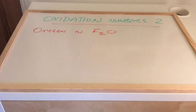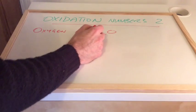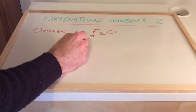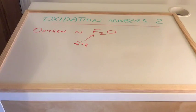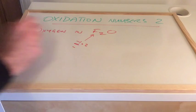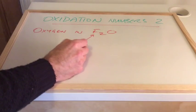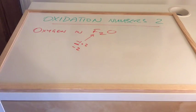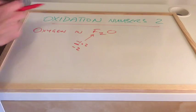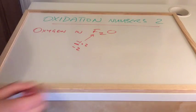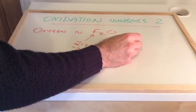If we think about the rules, we've got an always rule for fluorine — each fluorine is minus 1. So we multiply that by 2, because there are 2 F's in F₂O, giving us a combined minus 2. So to keep this compound neutral, that oxygen — remember it's usually minus 2 — but because it's with fluorine, it turns into plus 2.